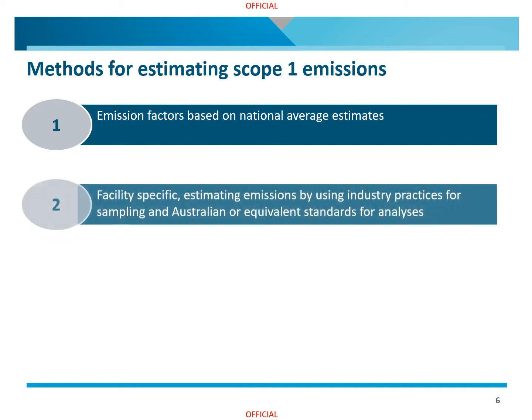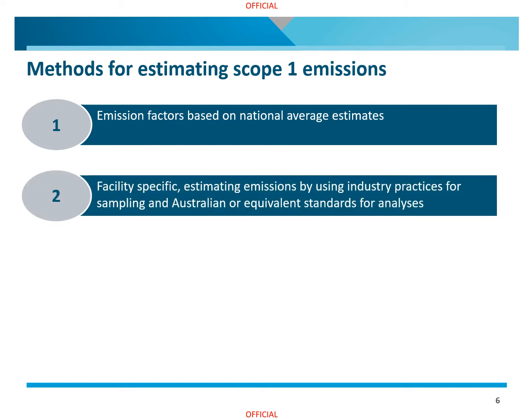Method 2 is a facility-specific method that uses industry-specific procedures for sampling, and Australian standards, international standards, or equivalent standards for analysis of fuels and raw materials. This provides more accurate estimates of emissions at the facility level. Method 2 enables corporations to undertake additional measurements, such as the qualities of fuels consumed at a particular facility, in order to gain more accurate estimates for that facility. For example, this may involve sampling the carbon and moisture content in coal, or measuring the composition of each component gas type in unprocessed natural gas.